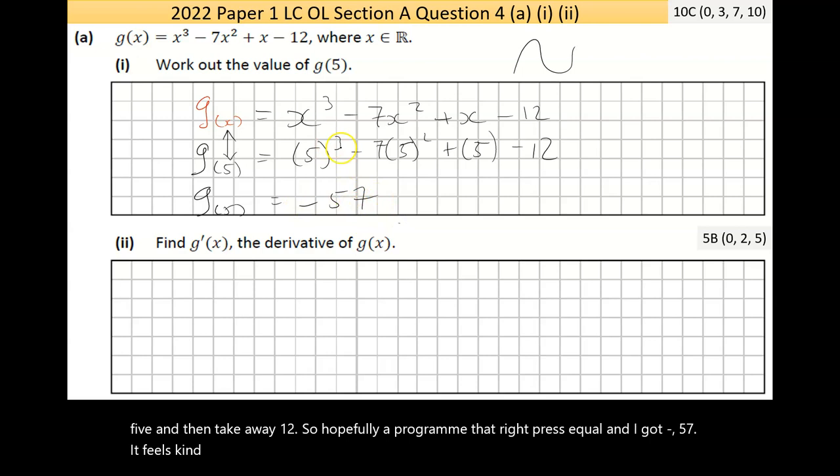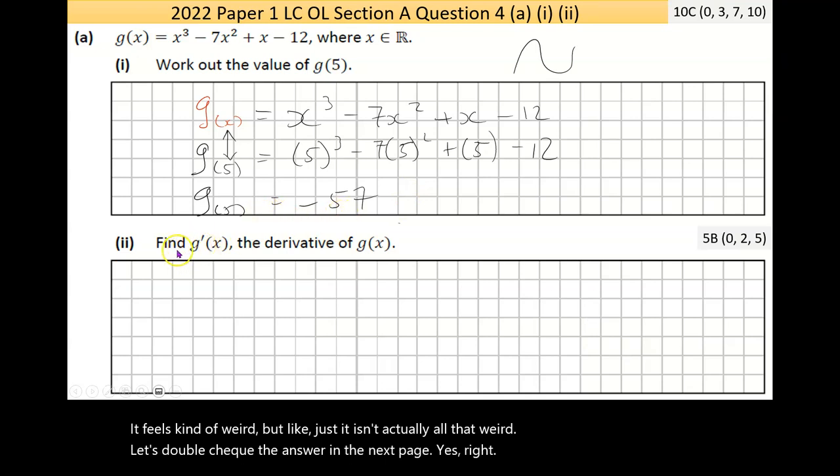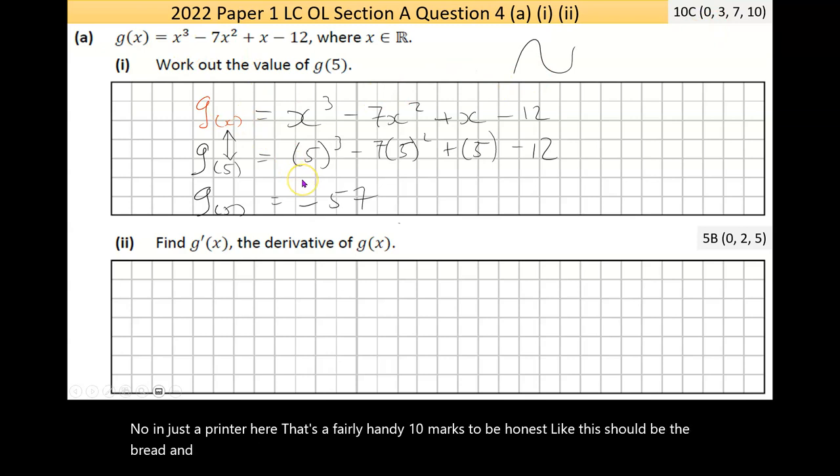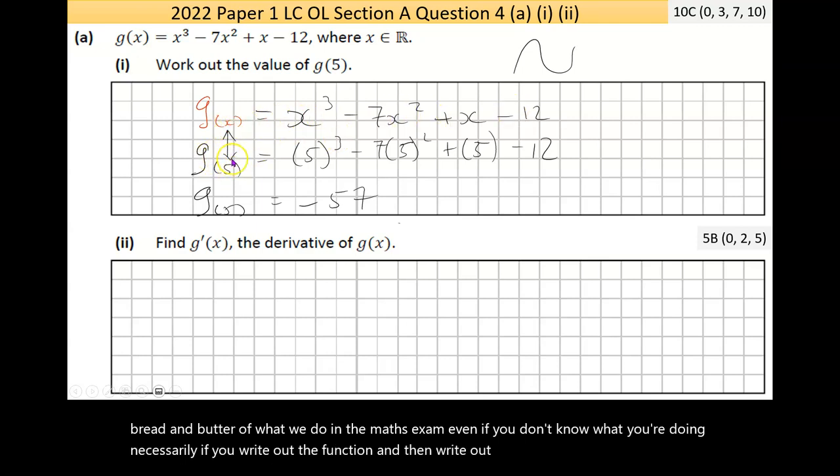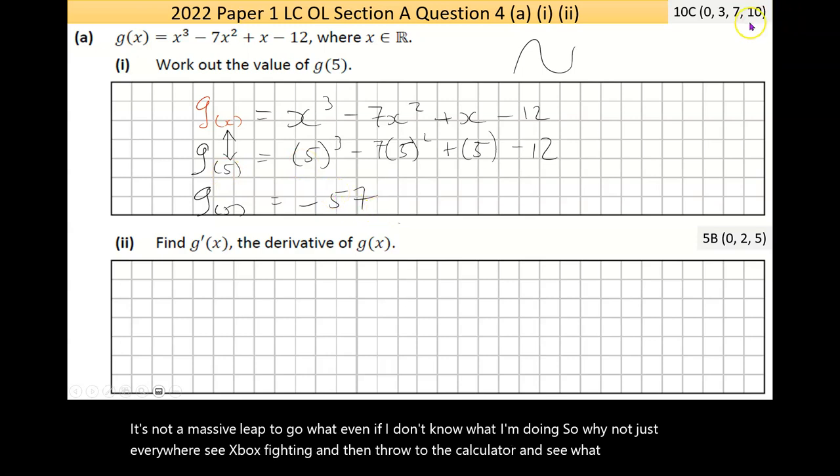So hopefully I programmed that right. Press equal, and I got negative 57. It feels kind of weird, but it isn't actually all that weird. Let's double check the answer on the next page. Yeah, that's right. Now, that's a fairly handy 10 marks to be honest. This should be the bread and butter of what we do in the maths exam. Even if you don't know what you're doing necessarily, just put 5 in everywhere you see x and throw it through the calculator.